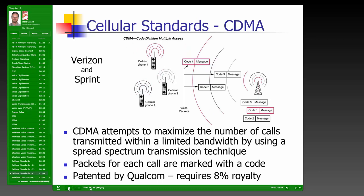CDMA (Code Division Multiple Access) is used primarily by Verizon and Sprint. It adds coding information to messages — similar to an IP address concept — maximizing calls within limited bandwidth using spread spectrum, which also prevents interference and makes calls more secure. Packets for each call are marked with a unique code. CDMA was patented by Qualcomm, which requires an 8% royalty — a reason AT&T and others chose not to adopt it.